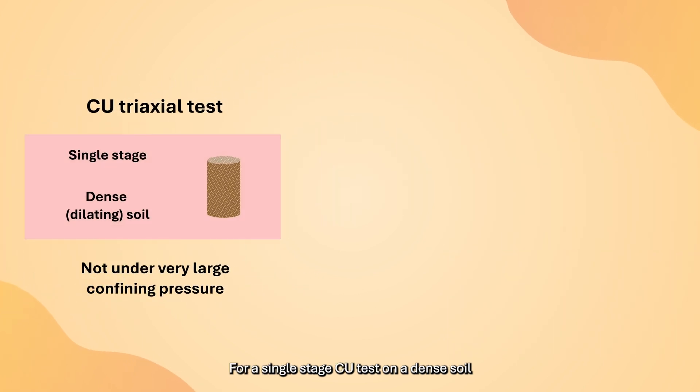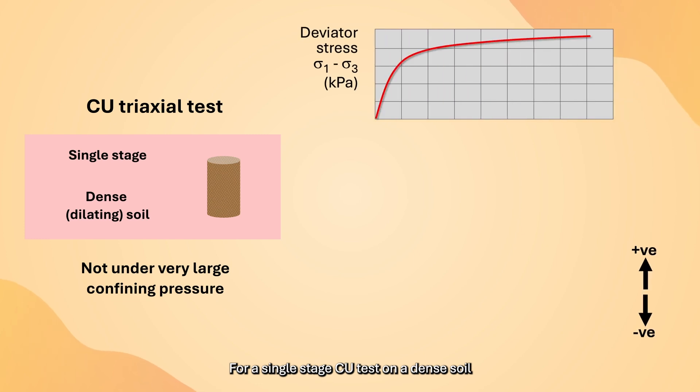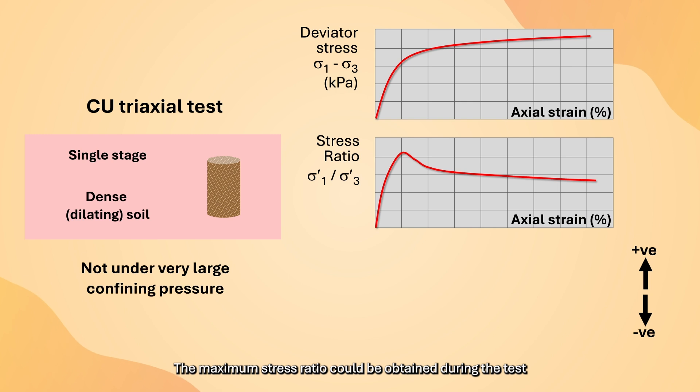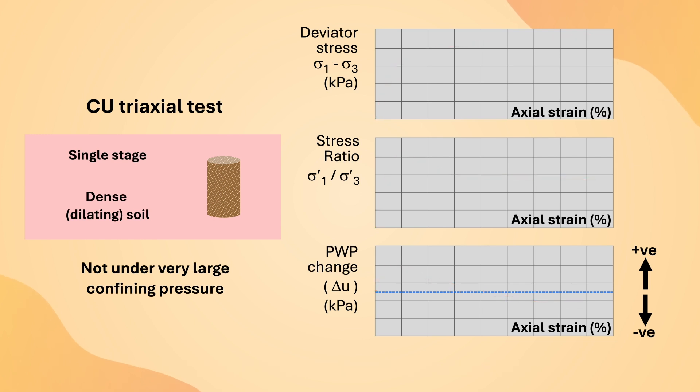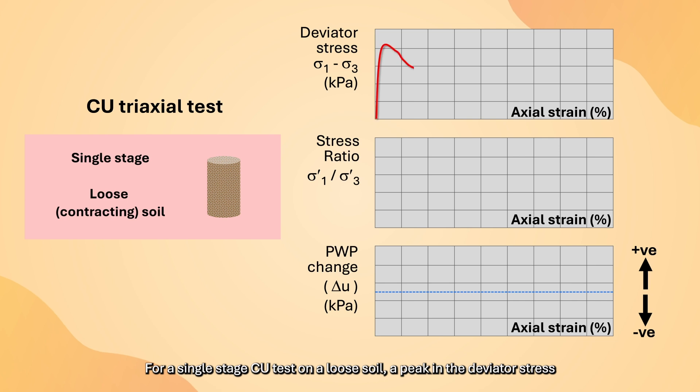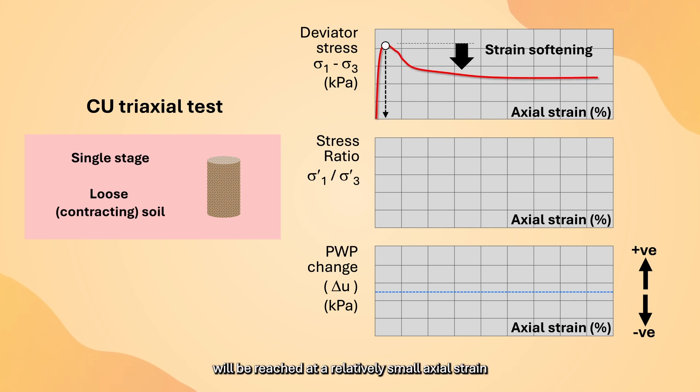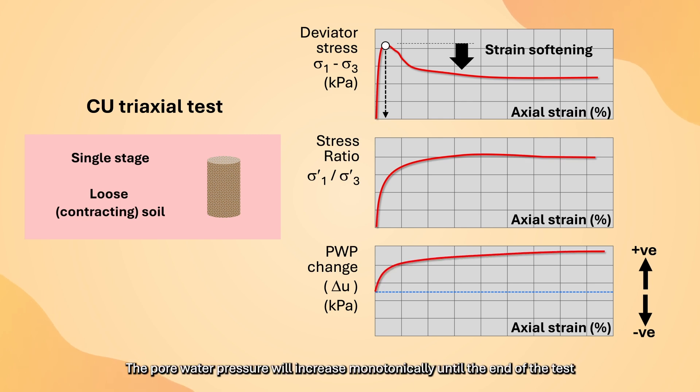For a single-stage CU test on a dense soil, the deviator stress will continue to increase up to the end of the test. The maximum stress ratio could be obtained during the test, while the pore water pressure will first increase sharply and then decrease monotonically throughout the shearing stage. For a single-stage CU test on a loose soil, a peak in the deviator stress will be reached at a relatively small axial strain. Then, there will be a post-peak drop in the deviator stress. The pore water pressure will increase monotonically until the end of the test.